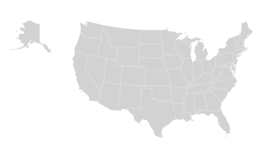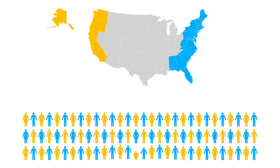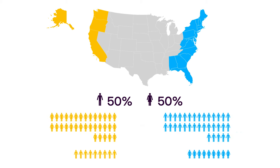Let's say you want to run a research project across the United States and you want your audience to be people from the West Coast states and the East Coast states. You also want your study to be represented by 50% men and 50% women. But what if your East Coast responses came from 80% men and 20% women, and vice versa from the West Coast?